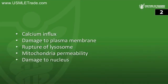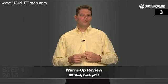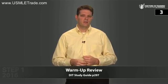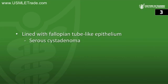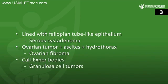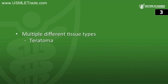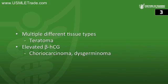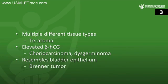Last warm-up question: what ovarian tumor matches each statement? Lined with fallopian tube-like epithelium is a serous cystadenoma. Ovarian tumor plus ascites plus hydrothorax (pleural effusion) is Meigs syndrome of ovarian fibroma. Call-Exner bodies are granulosa-theca cell tumors. Multiple different tissue types is a teratoma. Elevated beta-HCG is choriocarcinoma, and also dysgerminoma, but primarily think choriocarcinoma.